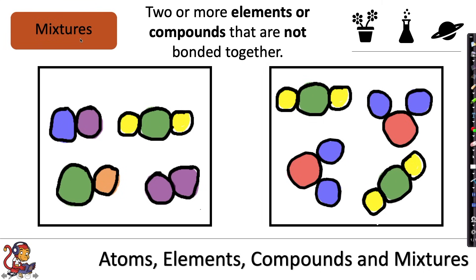Moving on to mixtures, the definition for a mixture is two or more elements or compounds that are not bonded together. So in this example we've got one, two, three compounds and an element all together, but they are not bonded together. Again here we've got two different types of compounds, one there and one there. They are in the same container or the same area, but they are not bonded together. So that is a mixture.